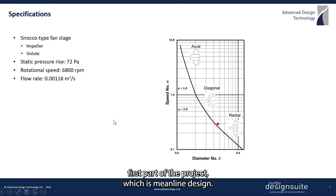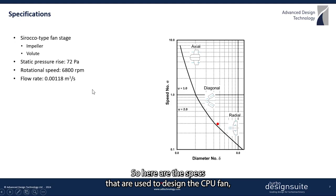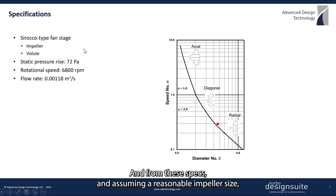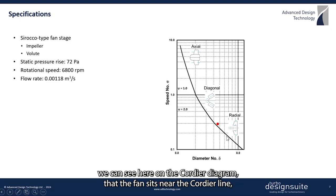Moving on to the first part of the project, which is mainline design. Here are the specs used to design the CPU fan, which consists of an impeller and a volute. From these specs, and assuming a reasonable impeller size, we can see on the Cordier diagram that the fan sits near the Cordier line.